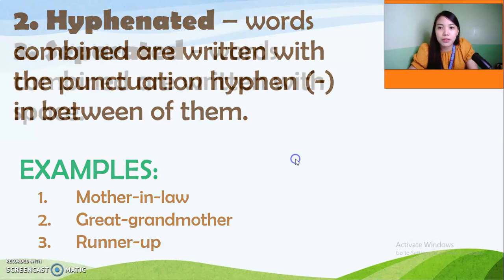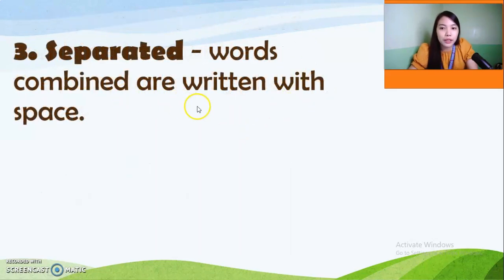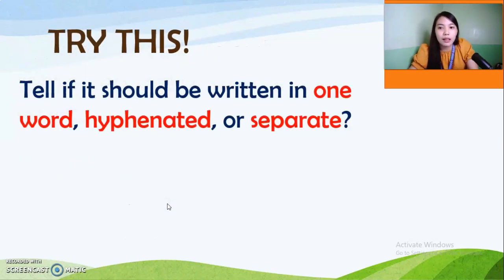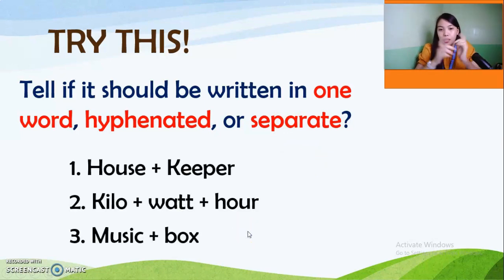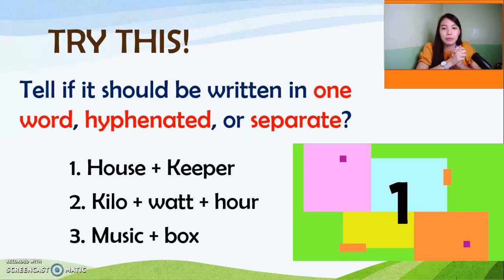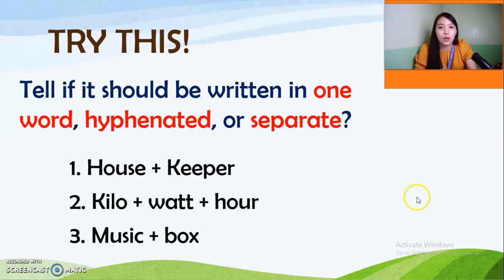The third way is the separate form — words combined are written with a space, like 'dining room,' 'ice cream,' and 'maid of honor,' which is three words and still considered a compound noun. Now let's try this one: tell whether each should be written in one word, hyphenated, or separated. I'll give you ten seconds. Go! Okay, time's up. If you have an answer, you can comment in the comment box.